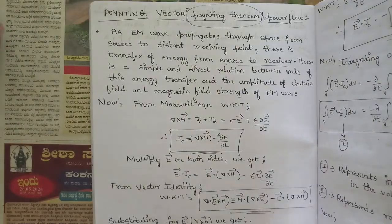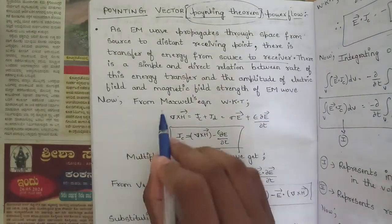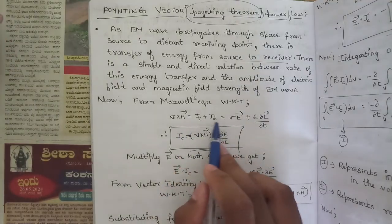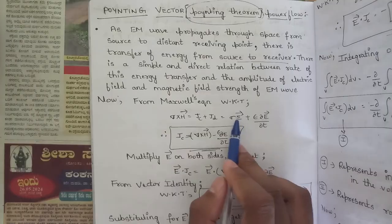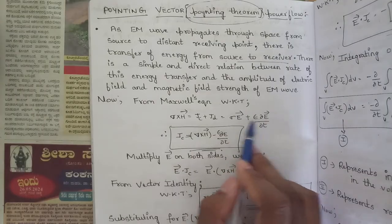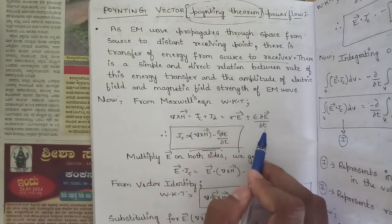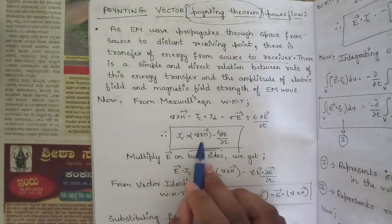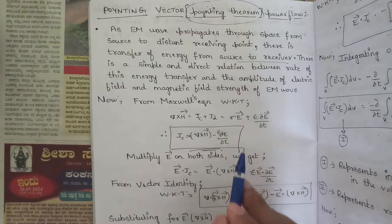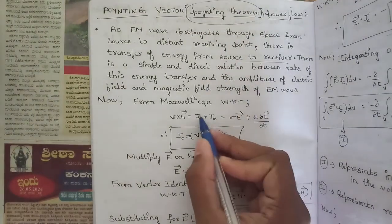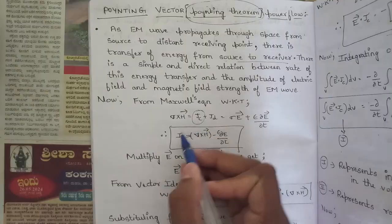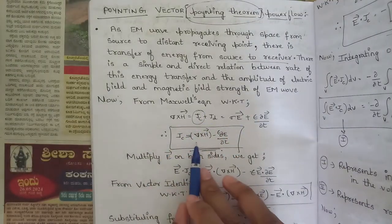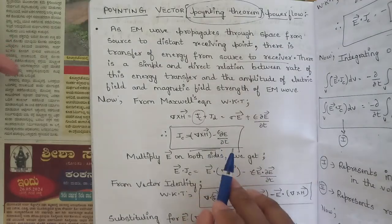From Maxwell's equation we know that ∇ × H = Jc + Jd = σE + ε(∂E/∂t), where Jc = ∇ × H − ε(∂E/∂t). If we take Jc individually using this equation, we get Jc = ∇ × H − ε(∂E/∂t).